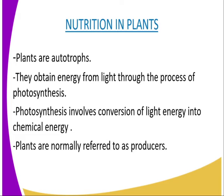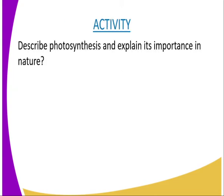During photosynthesis, carbon dioxide from the atmosphere is used and oxygen is released into the air as a by-product. Animals and plants use this oxygen for respiration and release carbon dioxide as one of its products. This way, photosynthesis helps maintain the levels of carbon dioxide and oxygen fairly constant in the atmosphere. Photosynthesis occurs mainly in the leaves of plants.